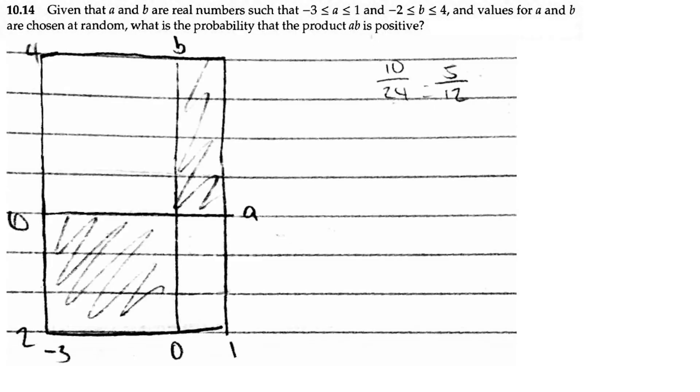AOP counting and probability, problem 10.14. Given that A and B are real numbers such that -3 ≤ A ≤ 1 and -2 ≤ B ≤ 4, and values for A and B are chosen at random, what is the probability that the product AB is positive?